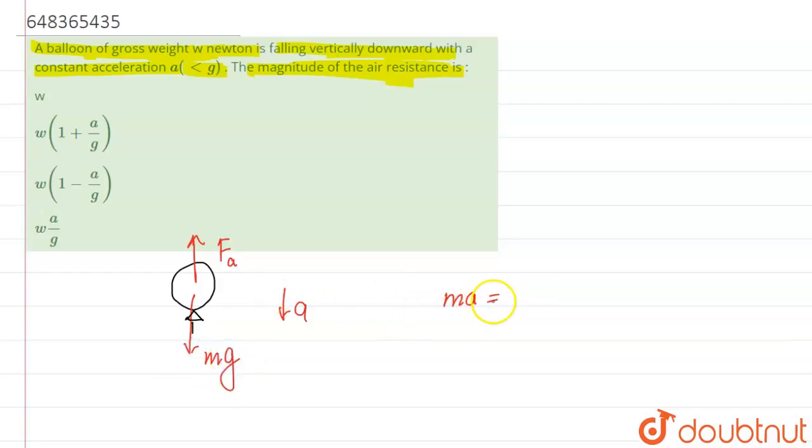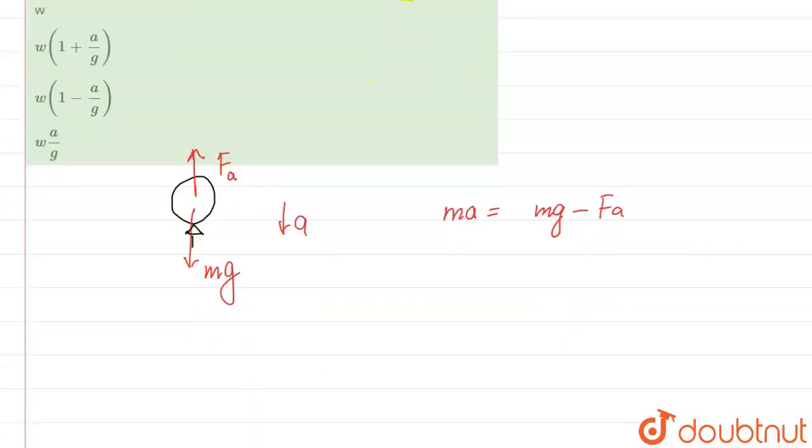Mass into acceleration of the balloon must be equal to Fa minus - no, mg will be greater, so it will be mg minus Fa. Finally what we will have, the value is Fa that must be equal to: